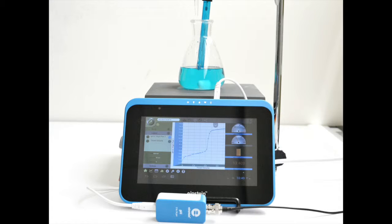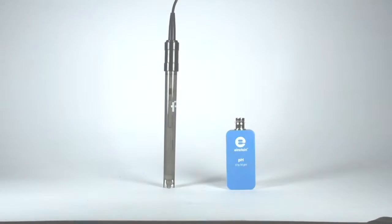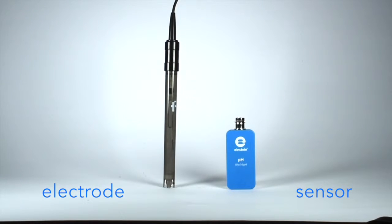Measuring pH is a key part of many chemistry experiments. The Einstein pH sensor has two parts, the sensor and the electrode.